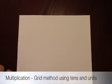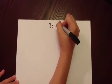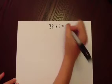Multiplication using the grid method for tens and units. We begin by writing the numbers clearly at the top, in this case a two-digit number multiplied by a single digit, and drawing a clear grid.